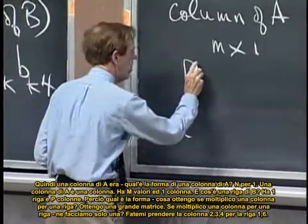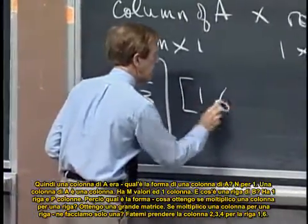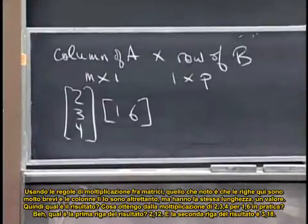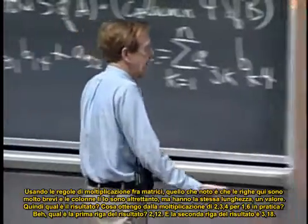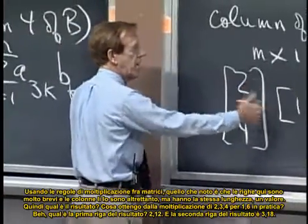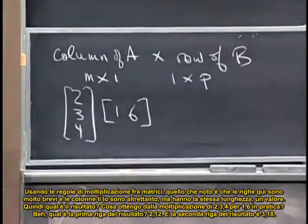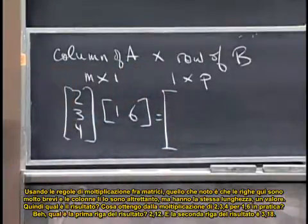Let me take the column two, three, four times the row one, six. That is a, that product there, I mean, I'm just following the rules of matrix multiplication. Those rules are just looking kind of petite, kind of small, because the rows here are so short and the columns there are so short, but they're the same length, one inch. So what's the answer? What's the answer if I do two, three, four times one, six? Just for practice.